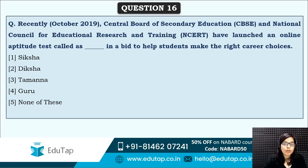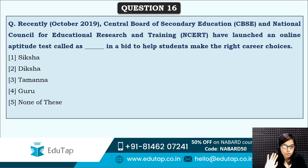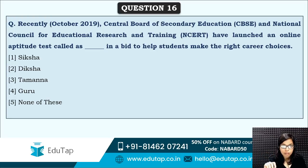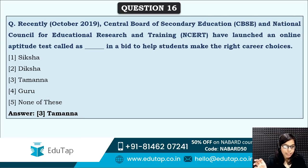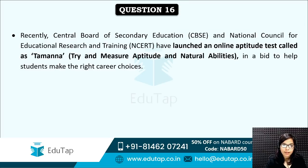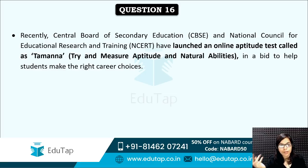Next: CBSE and NCERT have launched an online aptitude test to help students make the right career choices. After Class 10, students often don't know whether to choose science, commerce, or arts — this test will help. What is the name of this test? The correct answer is option three — TAMANNA, which stands for Try and Measure Aptitude and Natural Abilities. Students can measure their aptitude and natural abilities, and on that basis choose their further career options.